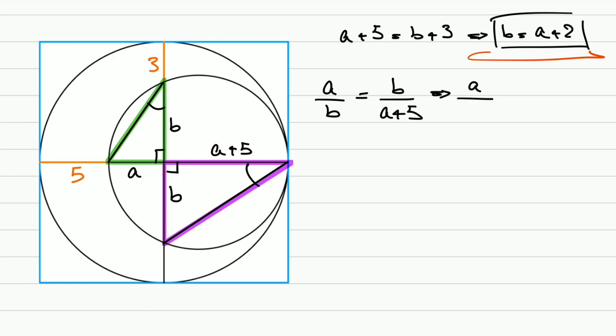We have A over A plus 2, that's B, is equal to A plus 2 over A plus 5. Now we cross multiply.